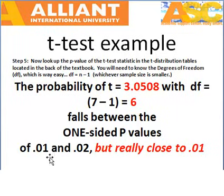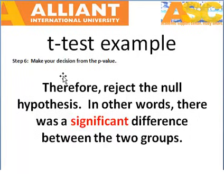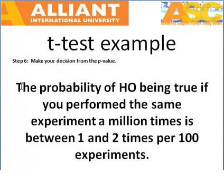Our table says that it falls right in between 0.01 and 0.02, which is a very small p-value. Since our calculated p-value is less than the cutoff value — the critical value — which is normally 0.05 unless otherwise stated, then we must reject the null hypothesis. When we reject the null hypothesis, we say there was a significant difference between the groups. Another way of looking at it: the probability that the null hypothesis was true — that there was no difference — is that if you perform the same experiment many times, you would get these results between one and two times per 100 experiments, which is not very encouraging if the original data is correct.